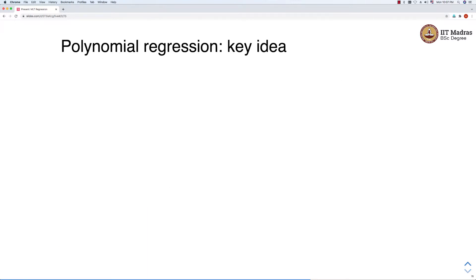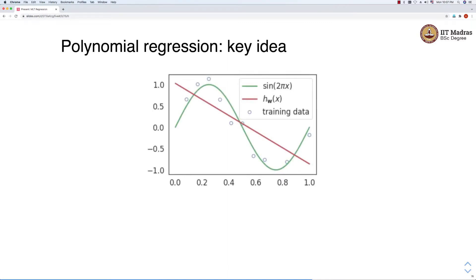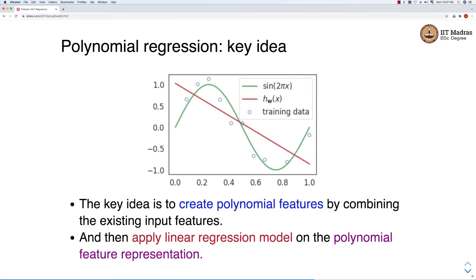Let's look at the key idea behind polynomial regression. The key idea here is to create polynomial features by combining the existing input features. And once we create these polynomial features, we apply the linear regression model on this polynomial feature representation.